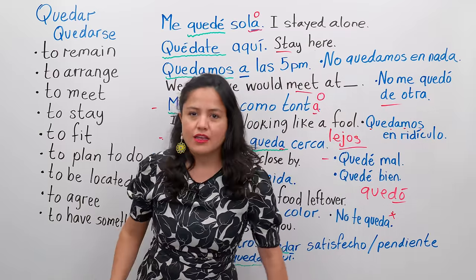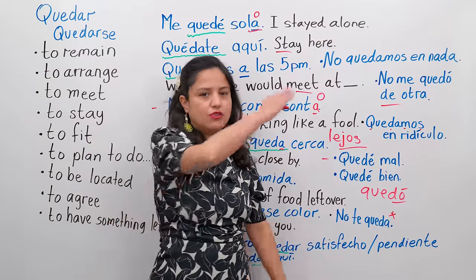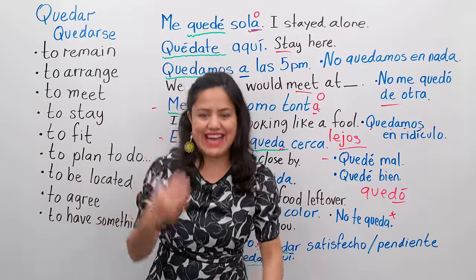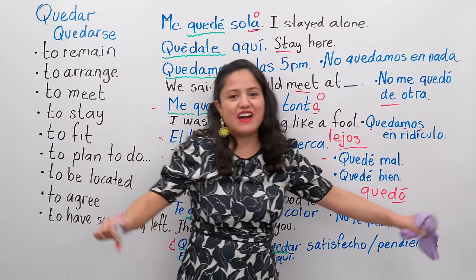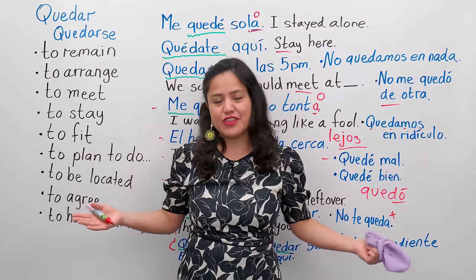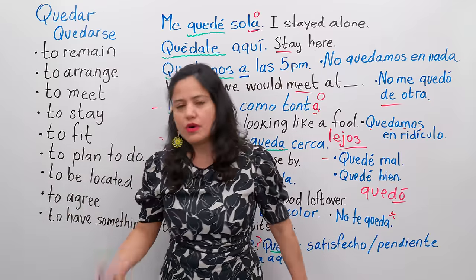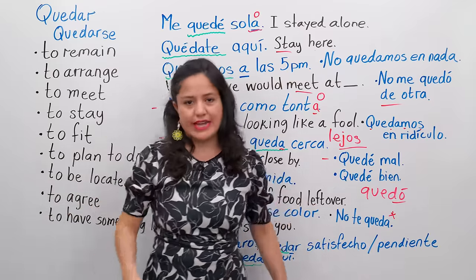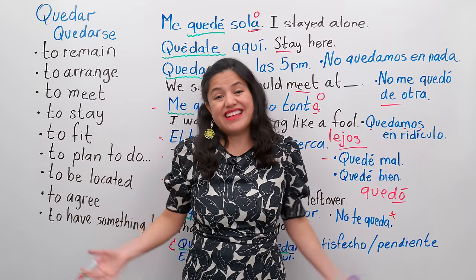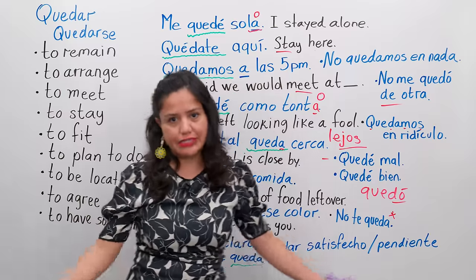No me quedó de otra — I didn't have a choice. Today I missed the bus — se me fue el autobús de las 11:30, pum, se fue. Yo llegué corriendo, llegué tarde. No me quedó de otra — I didn't have a choice. I had to be late. Taking a taxi wasn't an option. Running — I don't run so fast, I would have arrived all sweaty. No me quedó de otra, I had to wait. I didn't have a choice. Lo siento, perdóname.